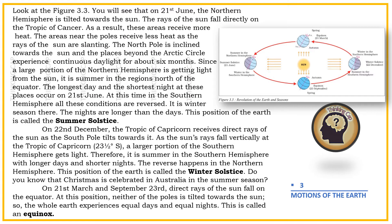Look at figure 3.3. You will see that on the 21st of June, the Northern Hemisphere is tilted towards the Sun. The rays of the Sun fall directly on the Tropic of Cancer. As a result, these areas receive more heat. The areas near the poles receive less heat as the rays of the Sun are slanting. The North Pole is inclined towards the Sun, and the places beyond the Arctic Circle experience continuous daylight for about six months.